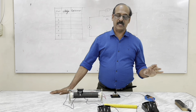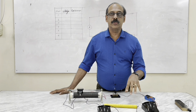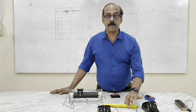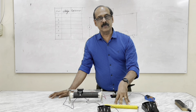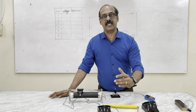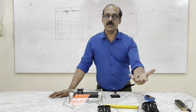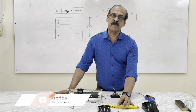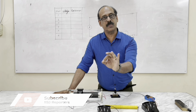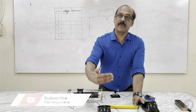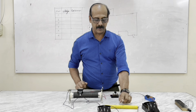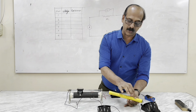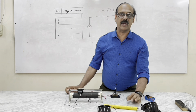Today we are going to discuss the experiment to determine the specific resistance of a given wire. In the examination, two or three wires will be given. We have to determine the specific resistivity of individual wires separately. I will explain the resistivity of one wire — this is an 80 centimeter long manganin wire.